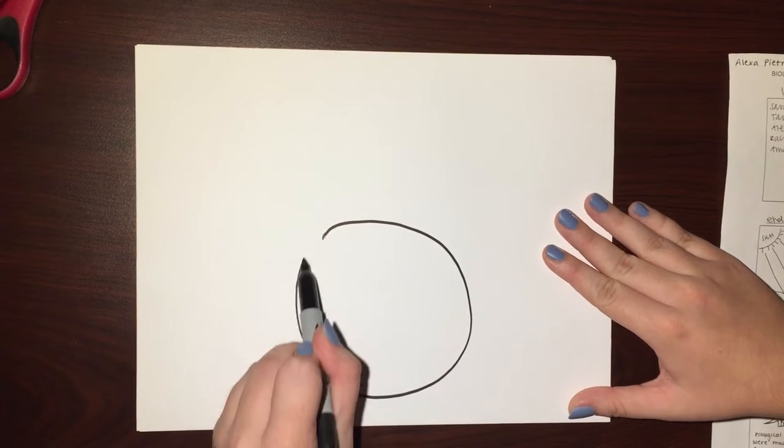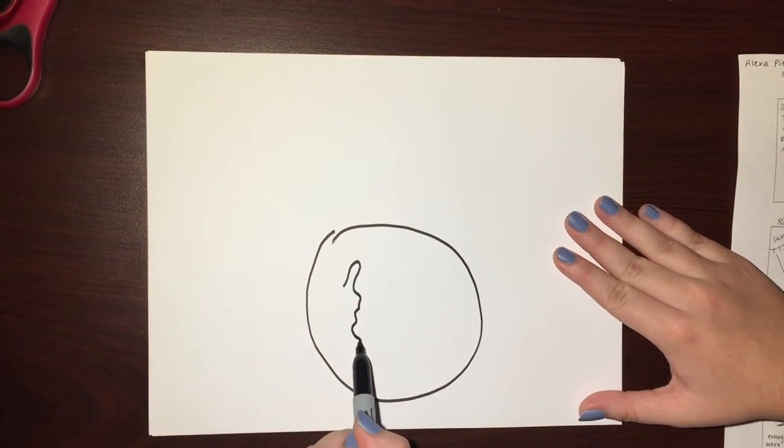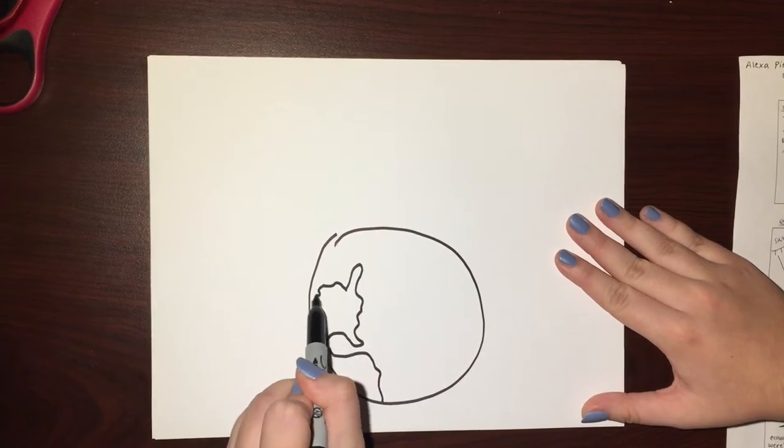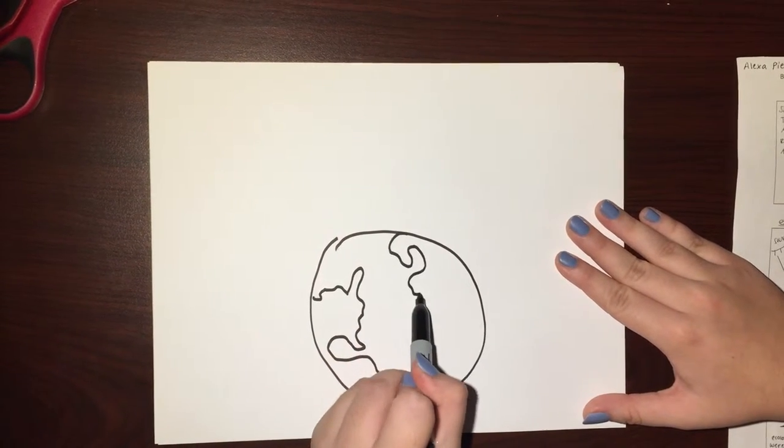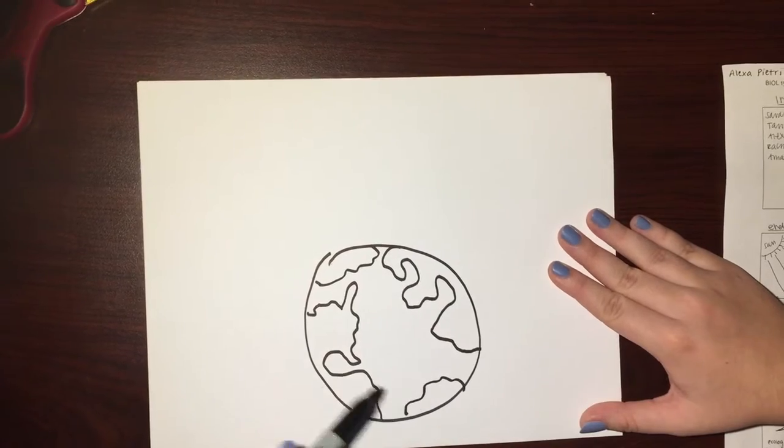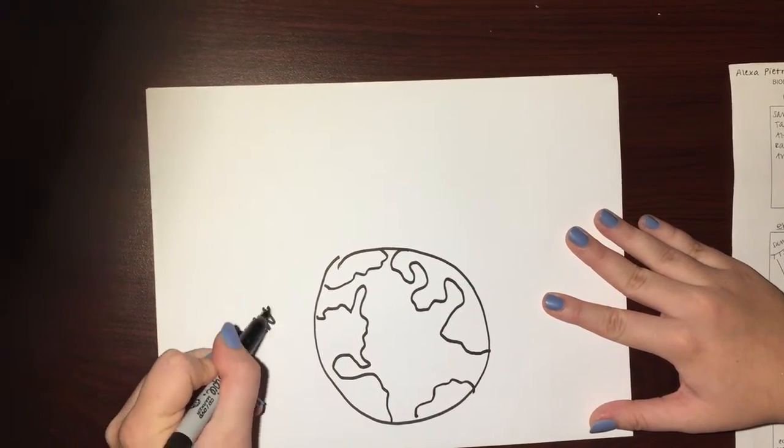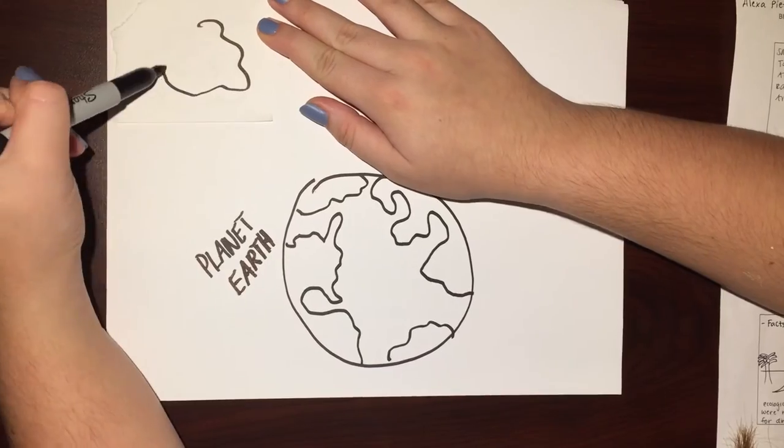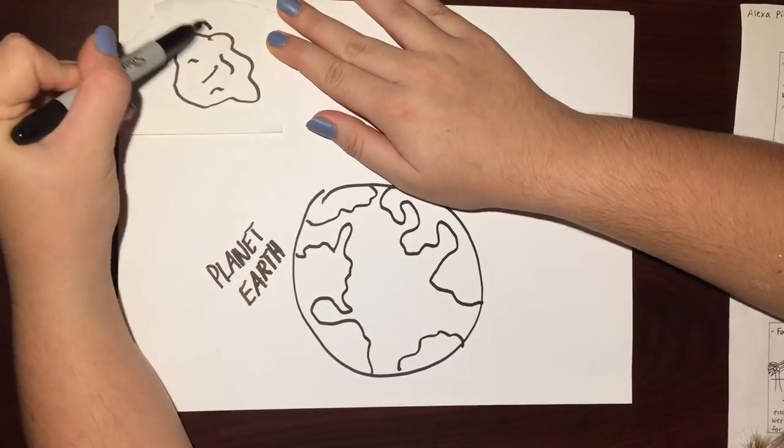The end Cretaceous extinction was a mass extinction event that eliminated about 75% of all living species. The widely accepted theory behind this is that a massive asteroid hit the Earth, causing tons of debris to cloud the atmosphere. This led to the ecosystem collapsing because sunlight and atmospheric gases could not operate normally.